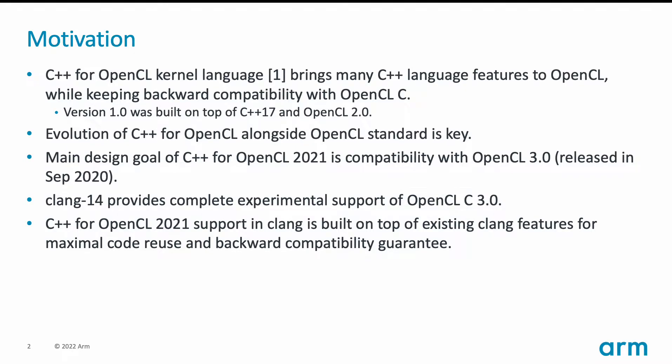C++ for OpenCL kernel language, which brings C++ features into OpenCL kernel programming, has been based on C++17 and OpenCL 2. However, the OpenCL standard has since evolved and OpenCL 3 has been released. Support of OpenCL 3 has been ongoing in Clang, and its experimental feature-complete release is in Clang 14 in March this year.